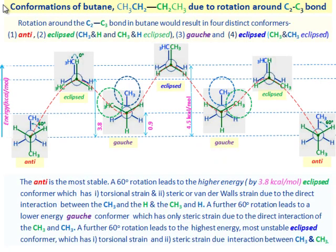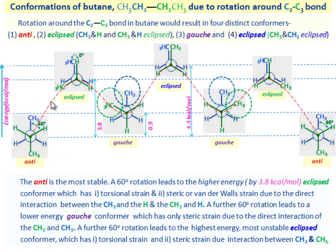Conformations of butane due to rotation around the C2-C3 bond. Rotation around the C2-C3 bond in butane would result in four distinct conformers: (1) anti, (2) eclipsed CH3 and H, (3) gauche, and (4) eclipsed CH3 and CH3. The anti is the most stable conformer. A 60-degree rotation leads to the higher energy eclipsed conformer.